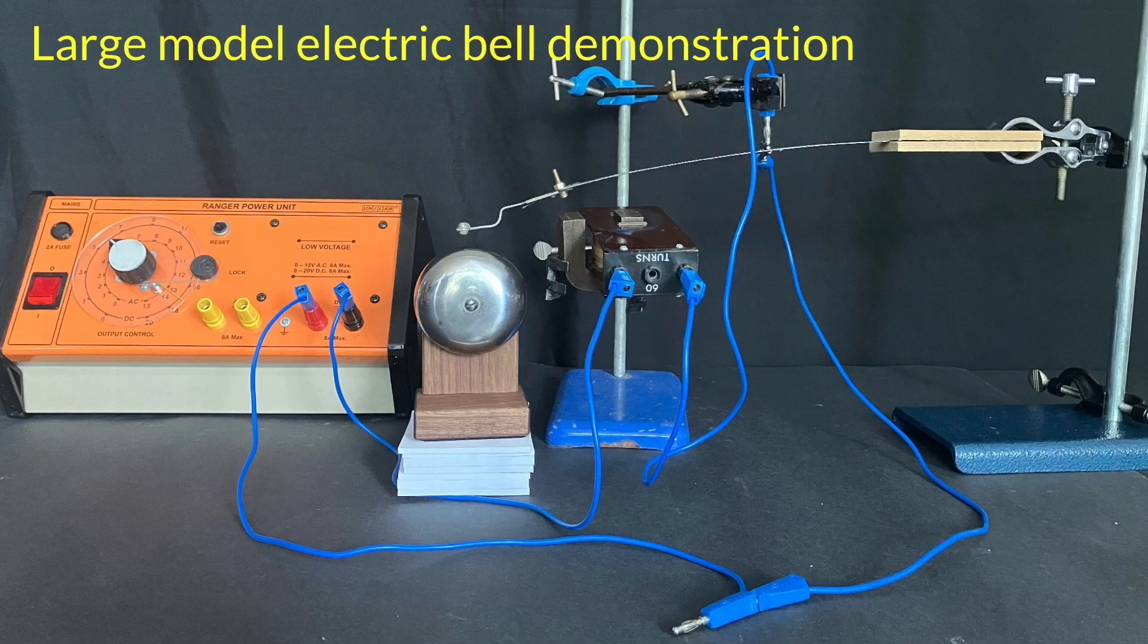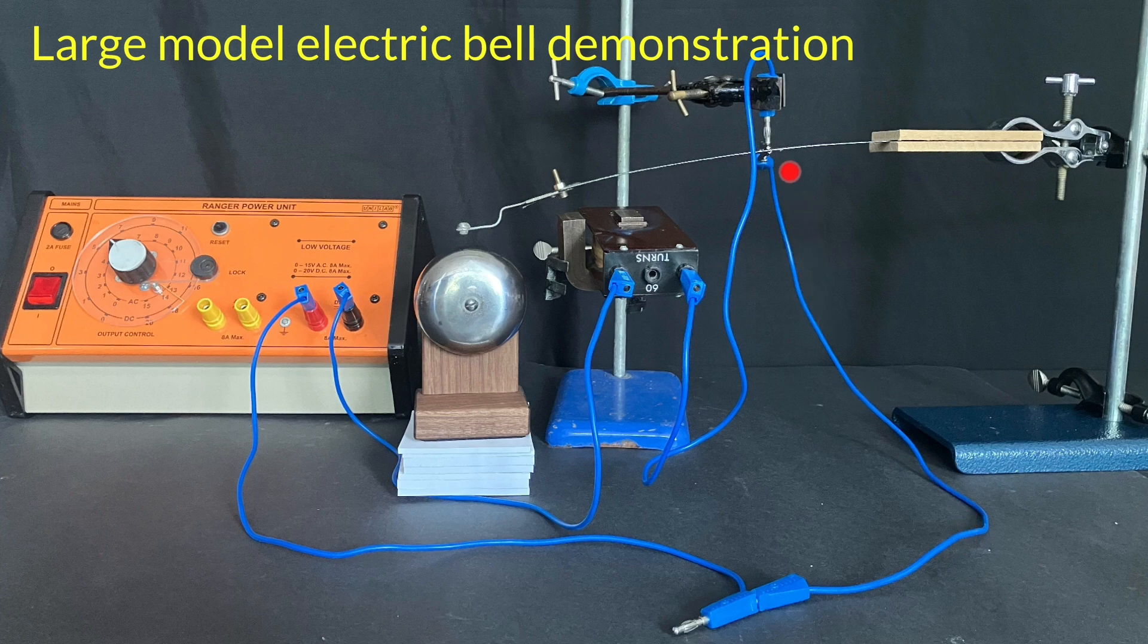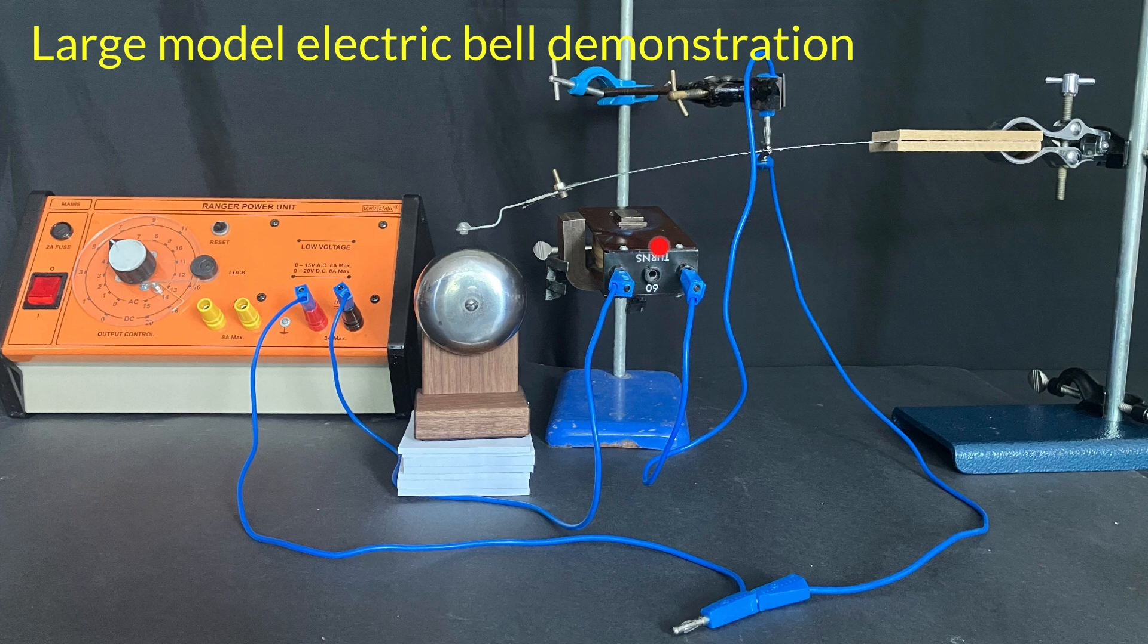It is easy to see on this photograph that the electric current flows out of here, round through this wire, up through here, round through this coil which has got 120 turns, and then back round to the power supply. When the current flows through there,